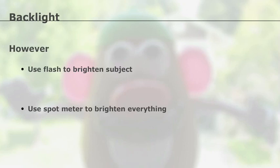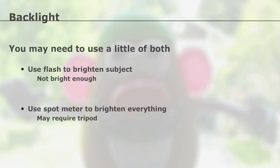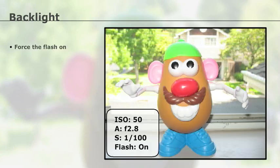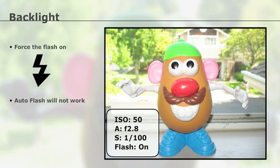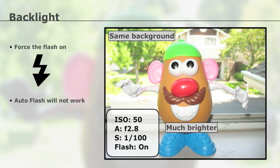However, in some situations with some cameras, using the flash won't brighten the subject enough, and using the spot meter will require a tripod. So you may have to step out of the box a bit, but let's cover the basics first. Just using the flash may help. To use the flash, I have to force it on. The auto flash setting won't fire the flash because of the bright background. The flash lit up the subject and kept the background from becoming too bright because all the camera settings stayed the same.